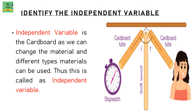Now identify the independent variable. The independent variable is the cardboard, because we can change the material of the cardboard tube. Instead of a cardboard tube, you could use any other material — maybe a paper rolled into a tube from an A4 sheet. Since different types of materials can be used, it is known as the independent variable.